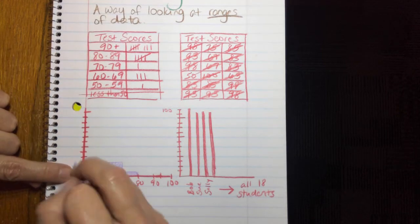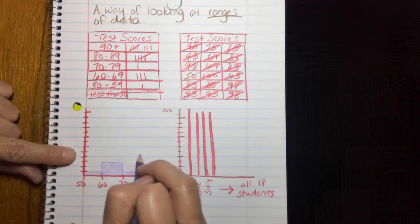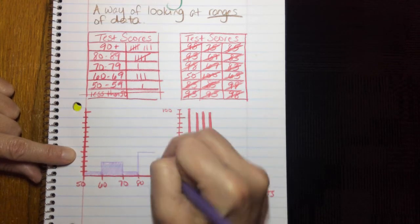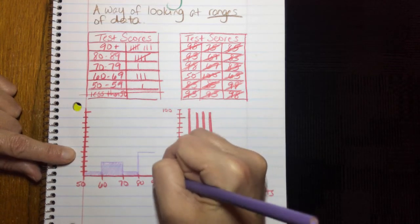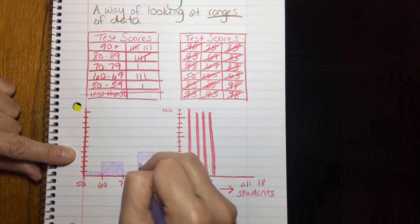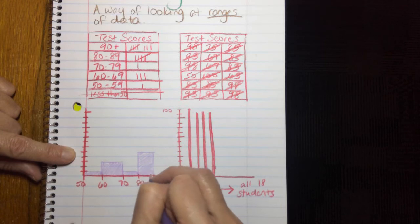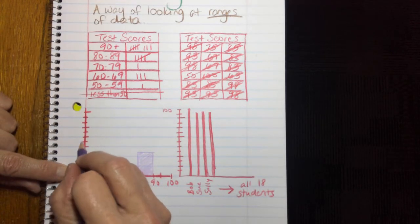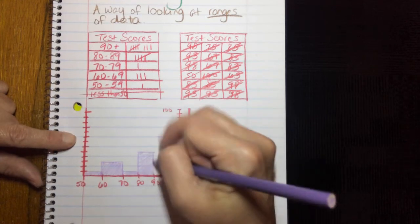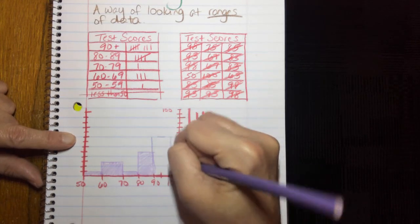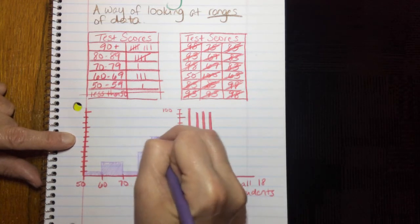5 kids, so 1, 2, 3, 4, 5, made between an 80 and a 79. And then 8 kids, so 1, 2, 3, 4, 5, 6, 7, 8, made between a 90 and a 100.